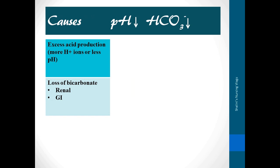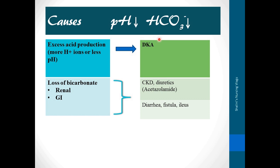The causes of metabolic acidosis can be two: excess production of acid or loss of base or bicarbonate. Conditions causing this include excess acid production like DKA (diabetic ketoacidosis), loss of base in CKD, use of diuretics like acetazolamide, and in GI conditions like diarrhea, fistula, and ileus. There can be many conditions; I've listed just a few.